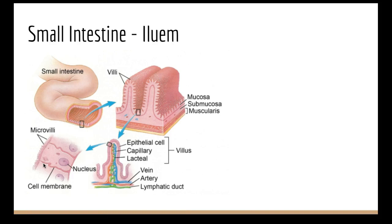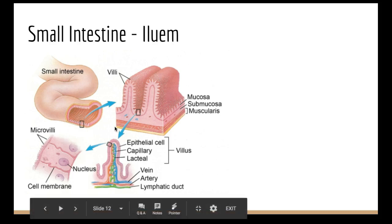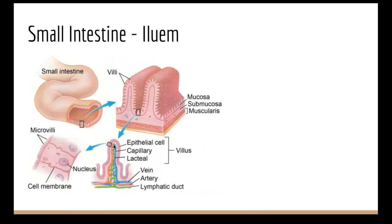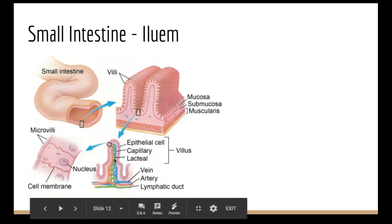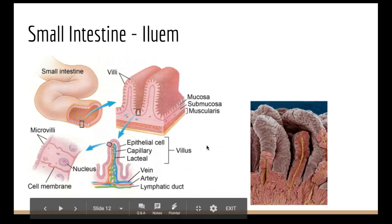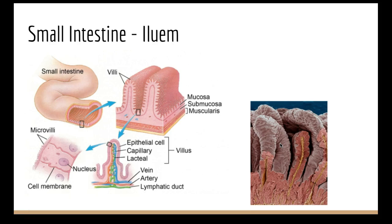The large surface area means nutrients are absorbed as efficiently and quickly as possible. For example, glucose is needed for cellular respiration and amino acids are needed to make new proteins. Once nutrients pass through the microvilli they cross the cell membrane and go either into the capillary bed — the bloodstream — or into the lymphatic system. This cartoon view matches what you can see in a real cross-section of intestine under an electron microscope.